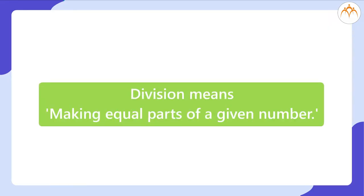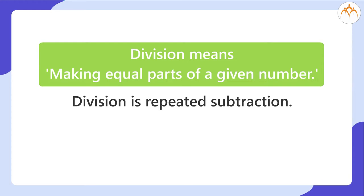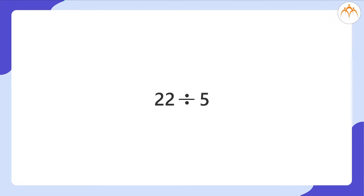You have learnt that division means making equal parts of a given number. You also know that division is repeated subtraction. And when we divide a number by another number, what do we get exactly? Let us take a very simple example: 22 divided by 5.